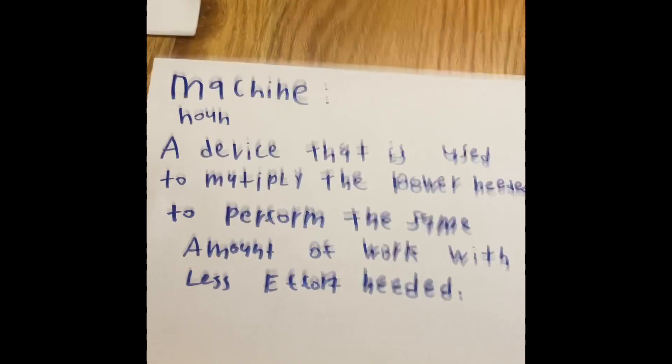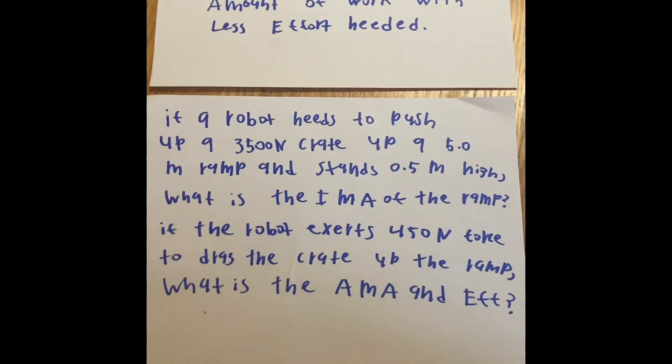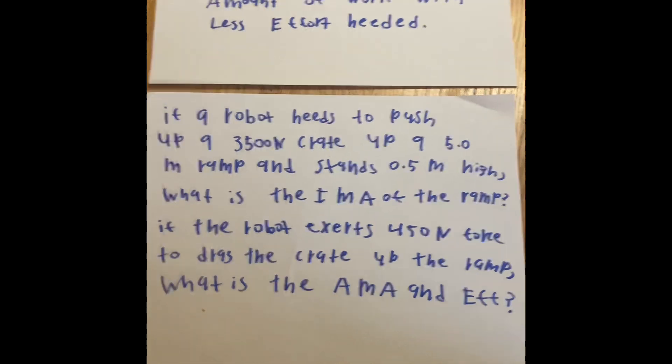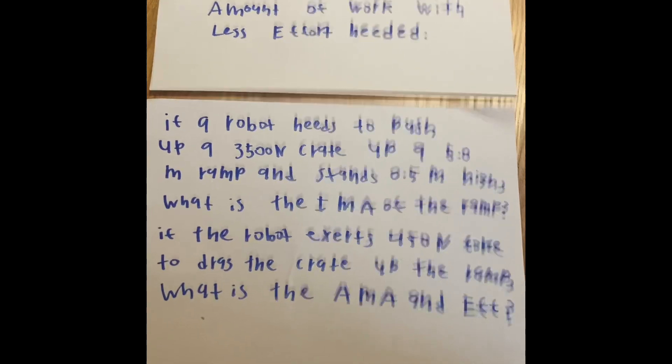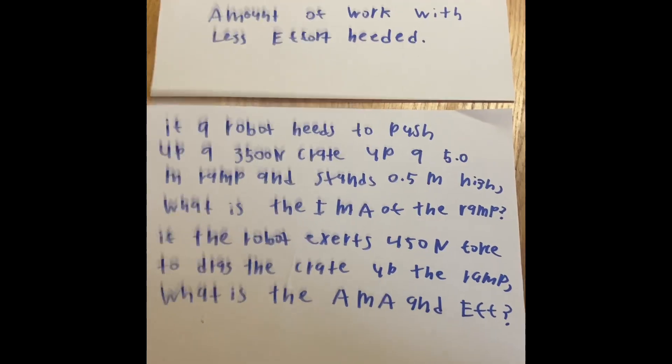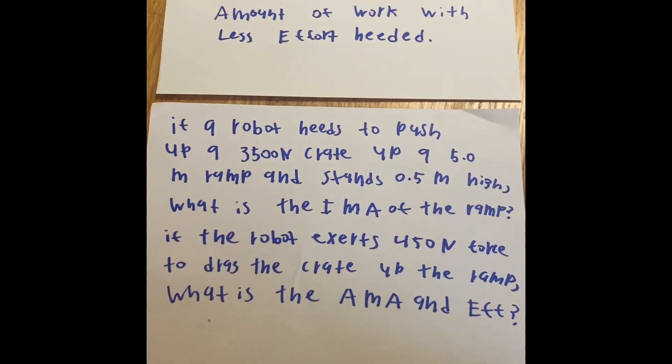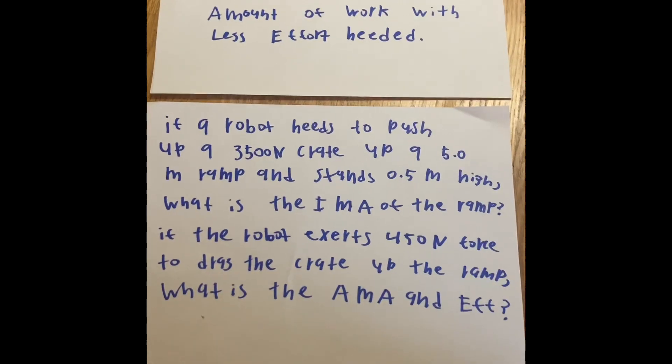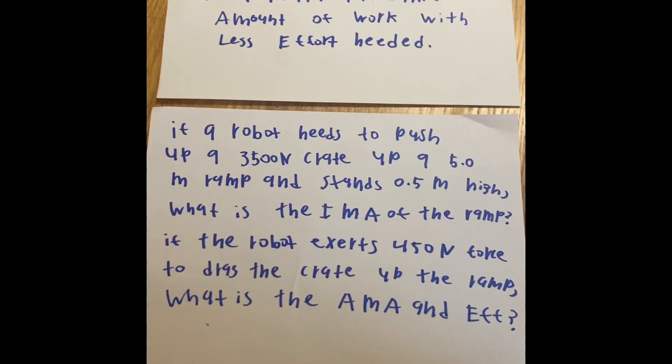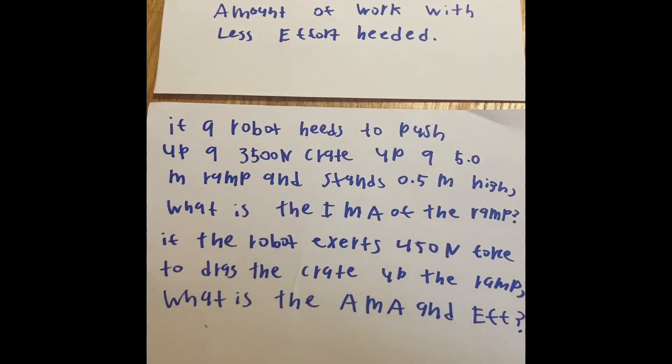And the word problem is right over here. If a robot needs to push up a 3,500 newton crate up a 5 meter ramp, and the height of the ramp is 0.5 meters high, what is the IMA of the ramp? If the robot exerts 450 newtons of force to drag the crate up the ramp, what is the AMA and the EFF?